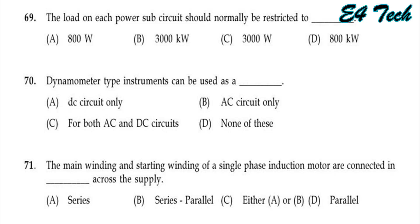The load on each power sub-circuit should normally be restricted to 3000 watts, that is 3 kilowatts, as per standards. Option C.